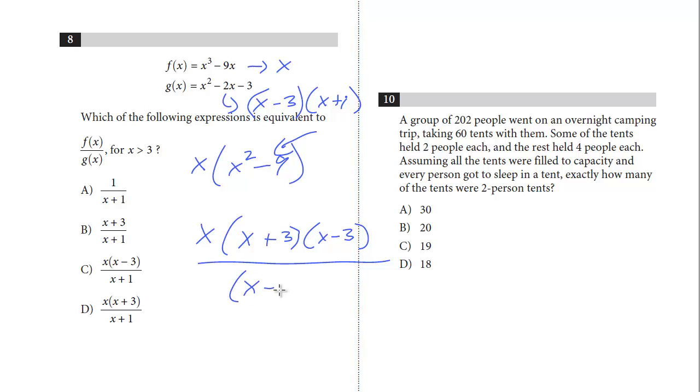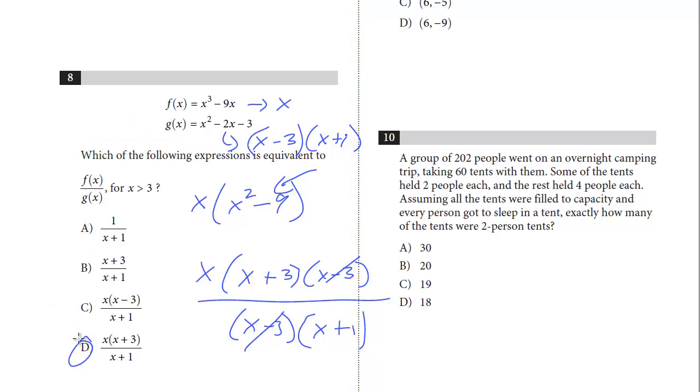And you see now, x minus 3, x plus 1. We can cancel out the x minus 3s. And that's the answer. x times x plus 3 over x plus 1 is choice D. Let's take a look at question number 9.